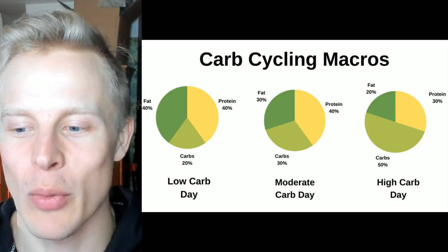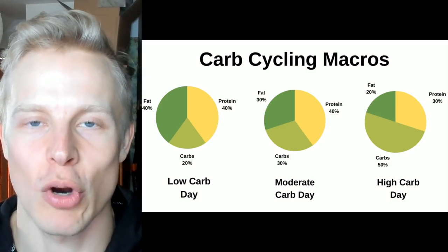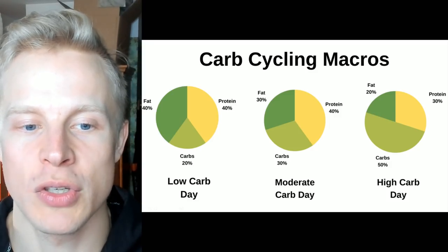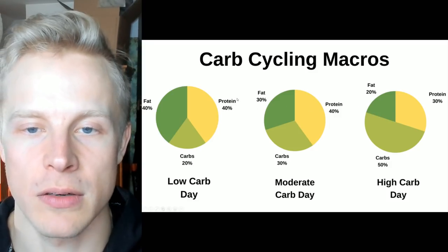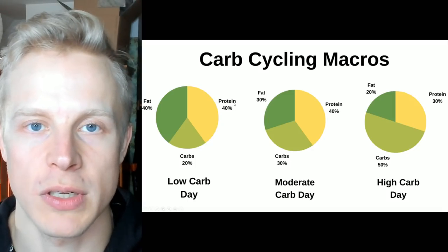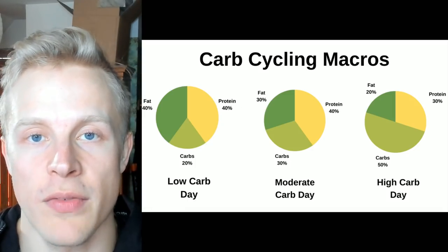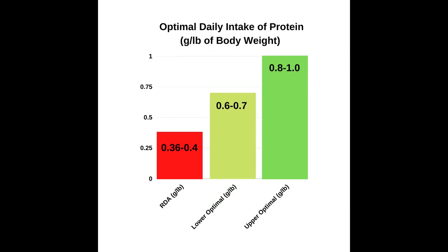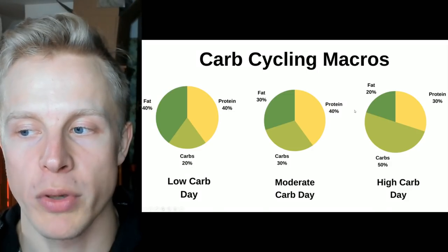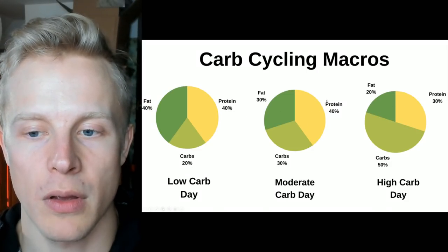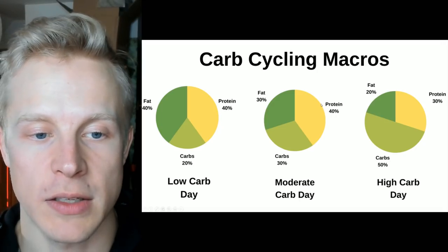I'm going to give you an optimal blueprint. When it comes to macros, you still want to get your protein regardless of the amount of carbs you're eating, because protein is very important for muscle growth, fat loss, satiety, general health, and bone density. I recommend keeping protein relatively high — between 30 to 40 percent is a good sweet spot. It's on the higher end, but it's effective.